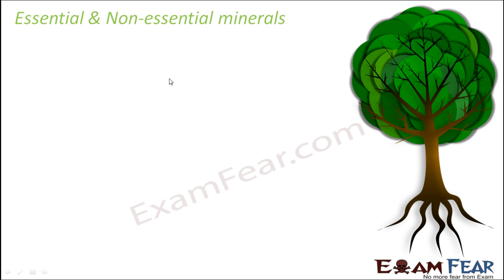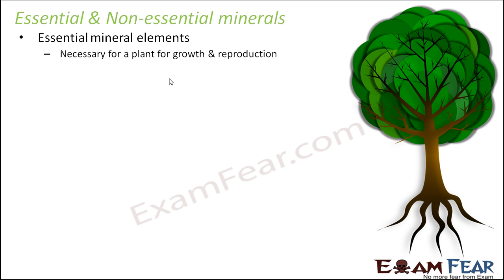The name itself is to some extent self-explanatory. Essential means something which is a must — it is necessary, you just cannot do without it. There is one set of mineral elements which are extremely necessary for a plant. The plant just can't do without them. They have a primary role to play and are necessary for a plant for growth and reproduction. If they are not there, the plants will suffer.